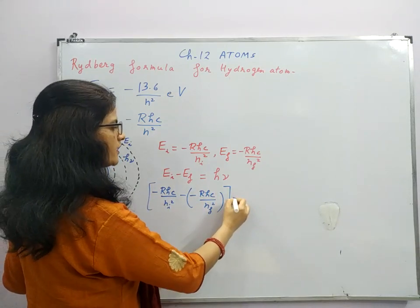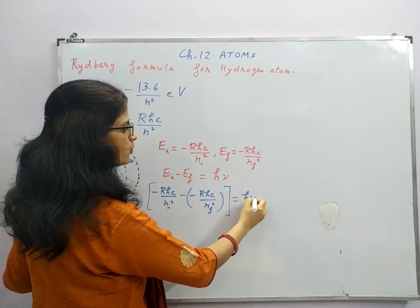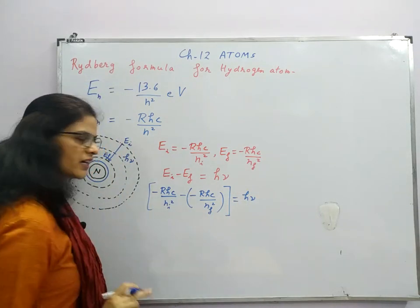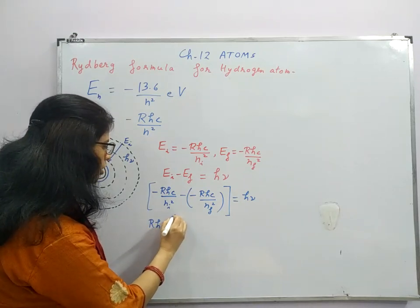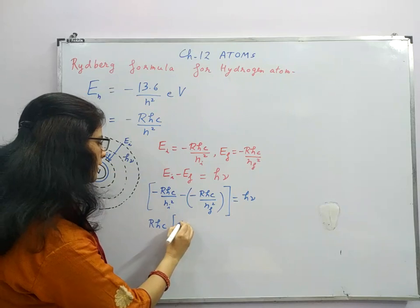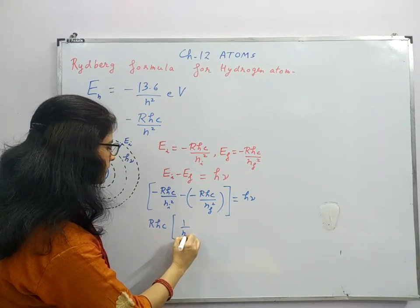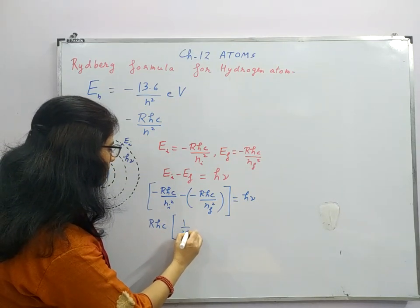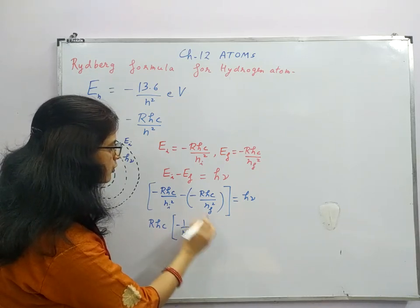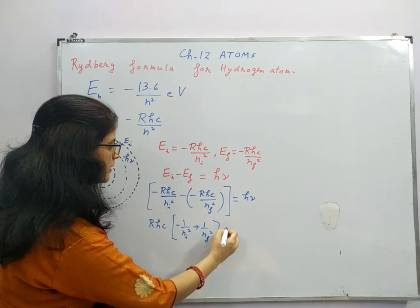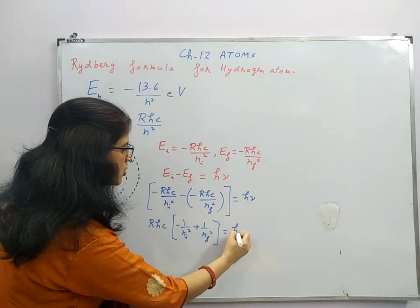This will give us h nu. So from here I can take R_h c common. Inside I will get minus 1 by n_i square plus 1 by n_f whole square. This minus minus will be plus now. So this will be h nu.